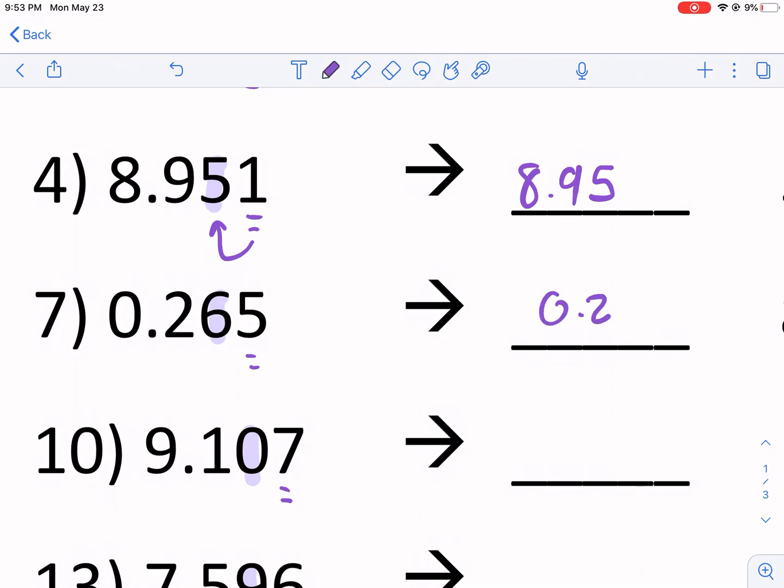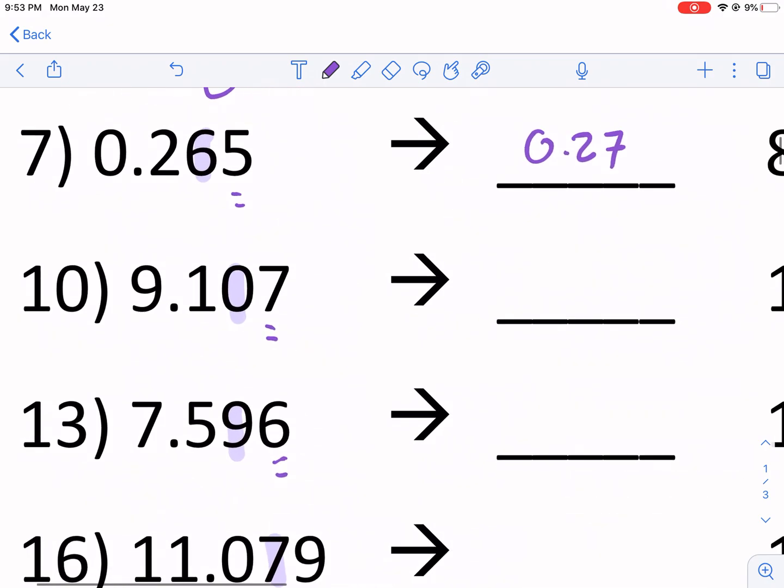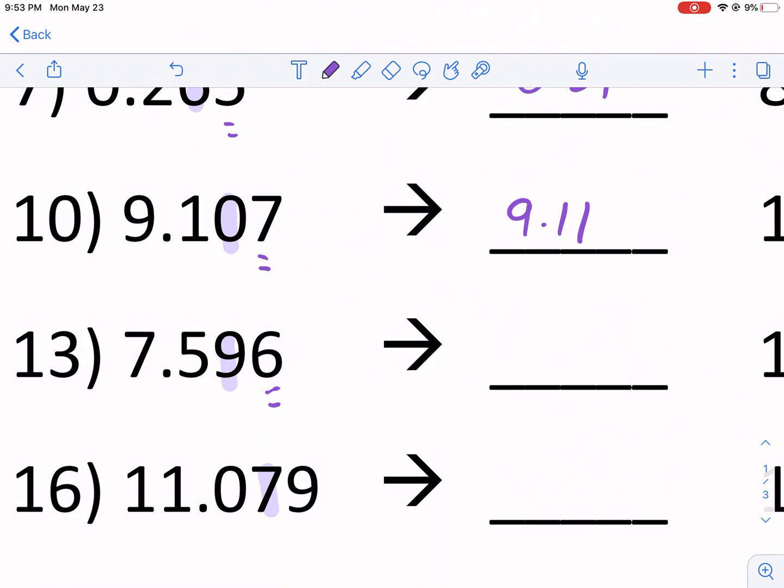5, that's just making the line there. So it's going to turn that into 0.27. 7 is bigger than 5, so it's 9.11. That 1, that 0 becomes a 1.